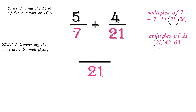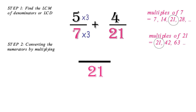Step 2: converting the numerators by multiplying. Our next step is to find what number multiplied by the 7 gives the LCD. We know that the number is 3 — 3 is the number that multiplies 7 to give 21. We multiply the numerator by the 3, so we do 5 times 3, which equals 15. We do the same for the second fraction: we find out what number multiplied by 21 will give the LCD. We know that the number is 1. We multiply the numerator, which is 4, by the 1, to get 4.